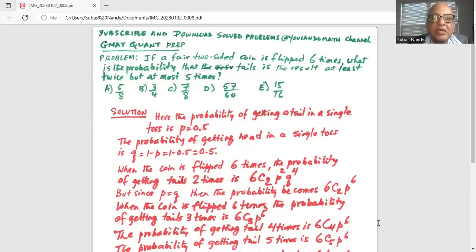So the problem states, if a fair two-sided coin is flipped six times, what is the probability that the tail is the result at least twice but at most five times? So minimum is two, maximum is five times you get tail. And you have five options for the answer.